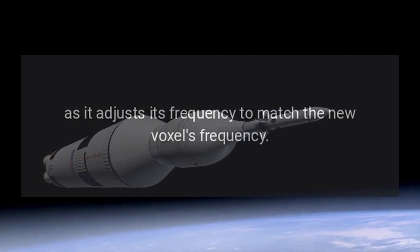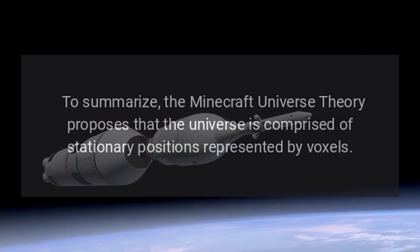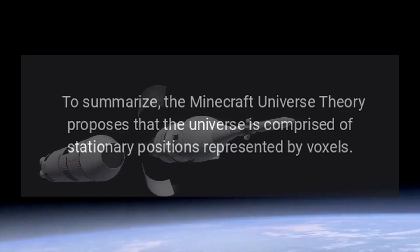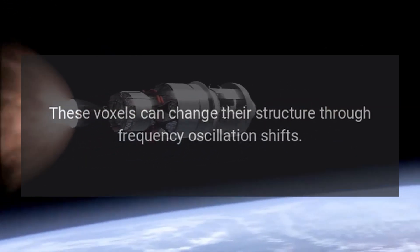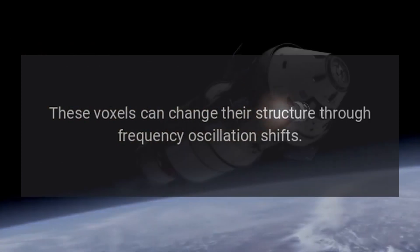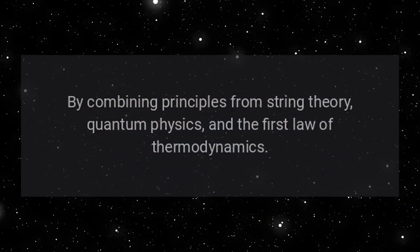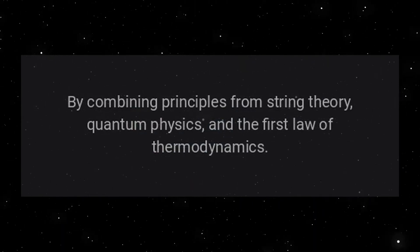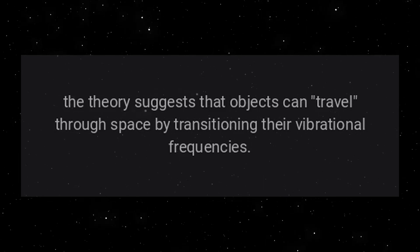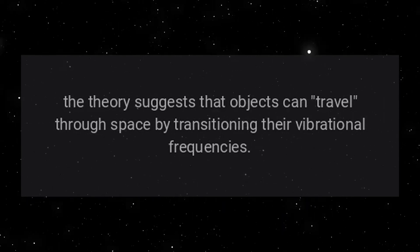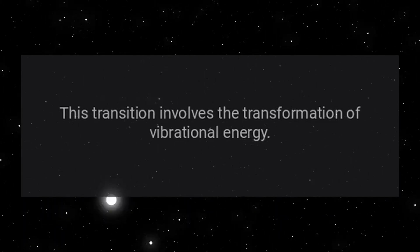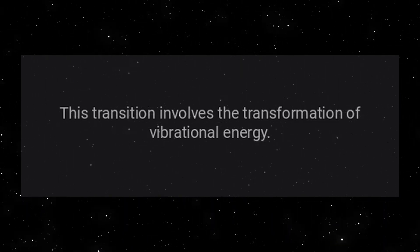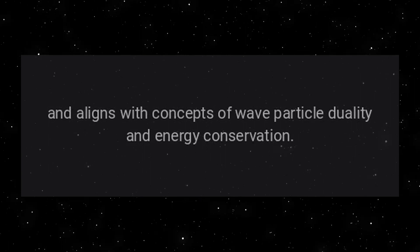To summarize, the Minecraft Universe Theory proposes that the universe is comprised of stationary positions represented by voxels. These voxels can change their structure through frequency oscillation shifts. By combining principles from string theory, quantum physics, and the first law of thermodynamics, the theory suggests that objects travel through space by transitioning their vibrational frequencies to match the frequencies of different voxels, aligning with concepts of wave-particle duality and energy conservation.